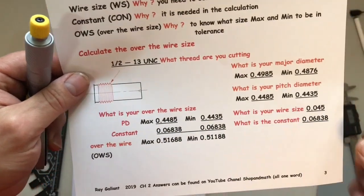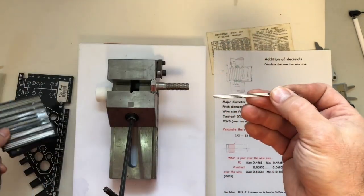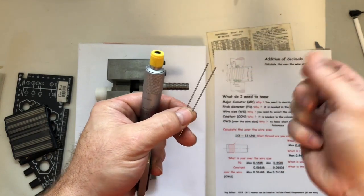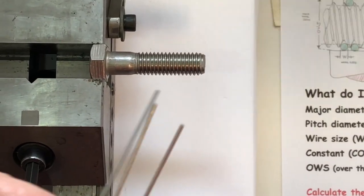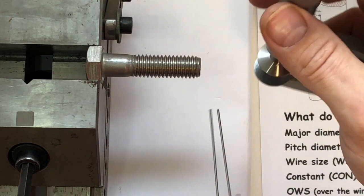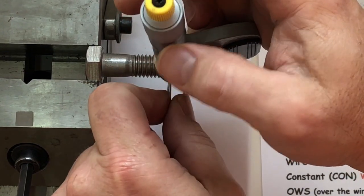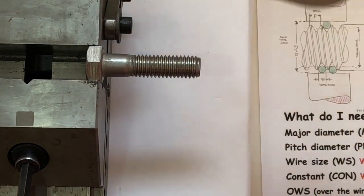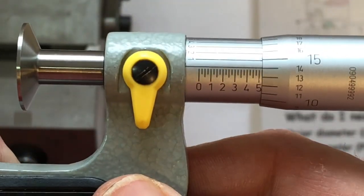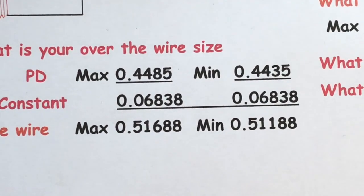Now we want to check our wire sizes — we want to use a 45 thou wire. We grab our wire set and pull out a 45 thou wire. Two go on the top, one goes on the bottom, or vice versa — doesn't really matter. We get our reading: 514, 516. We're allowed to be 516 to 511. Therefore, this is a good thread.